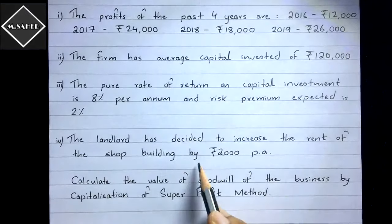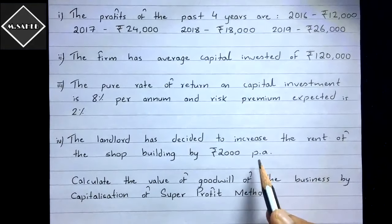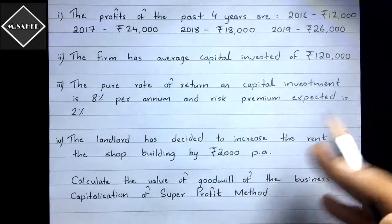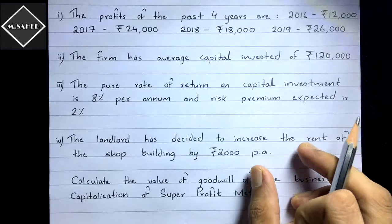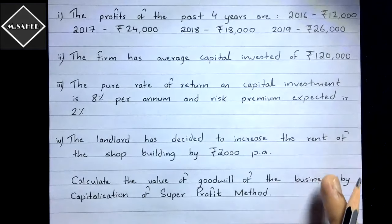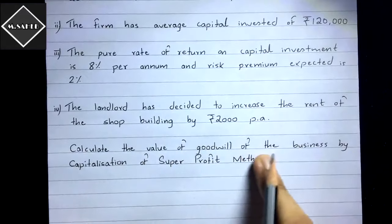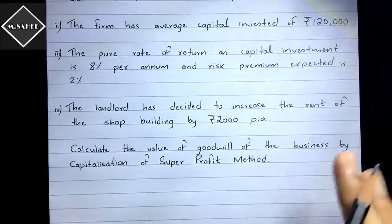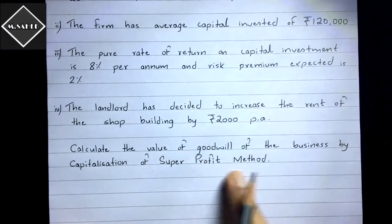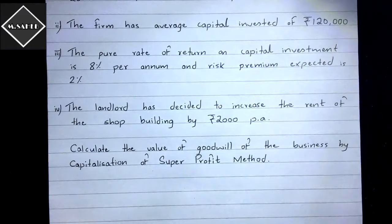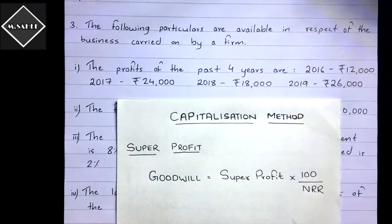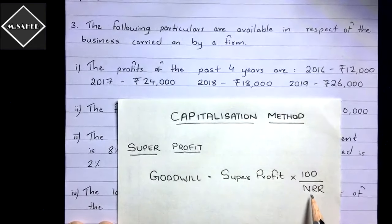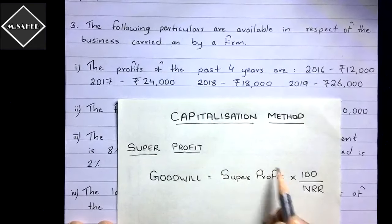The question also states that the landlord has decided to increase the rent of the shop building by 2,000 per annum. This is a future expense, so it must be subtracted from the profits. The question asks us to calculate the goodwill using the capitalization of super profit method.